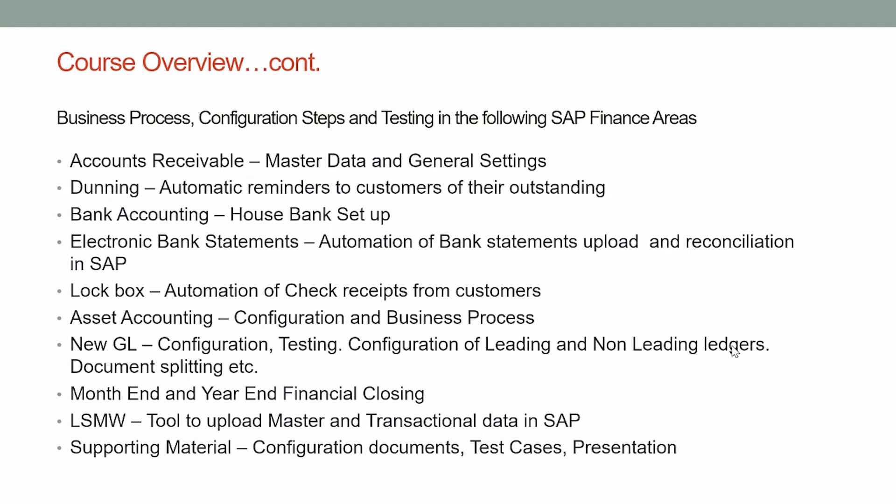In the accounts receivable area, we will discuss master data settings and general settings. Important functionalities like dunning will be covered — alerting customers about their outstanding balances. This process can be automated in SAP: SAP can run a batch job at a period specified by you and send reminders through email or any other mode to customers automatically. These will be configured and discussed in this course.